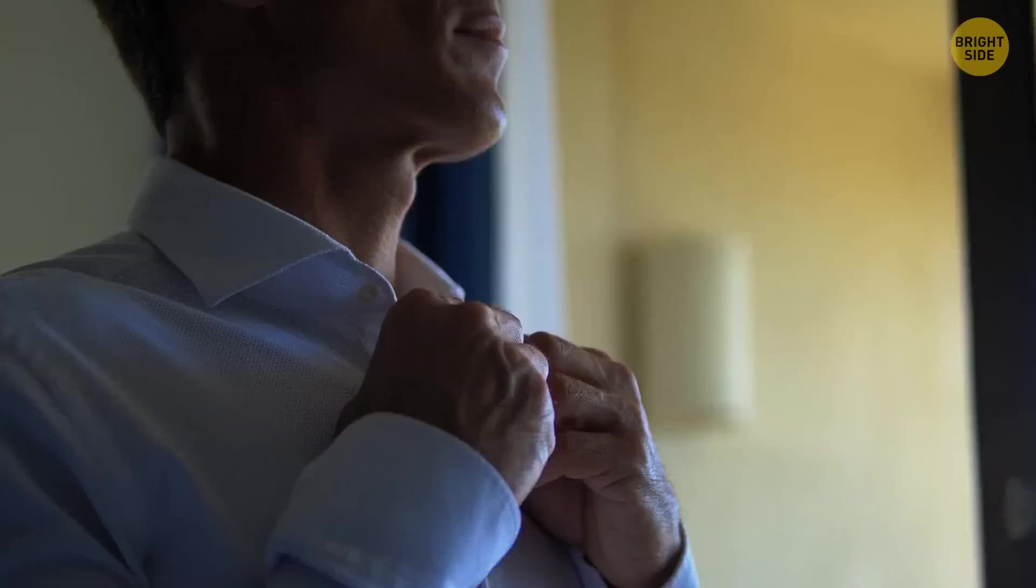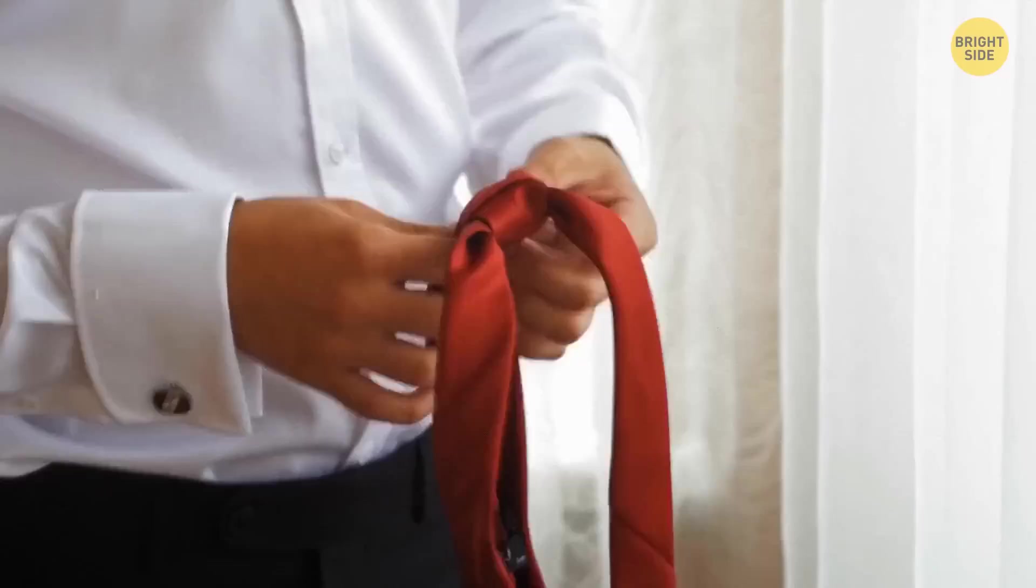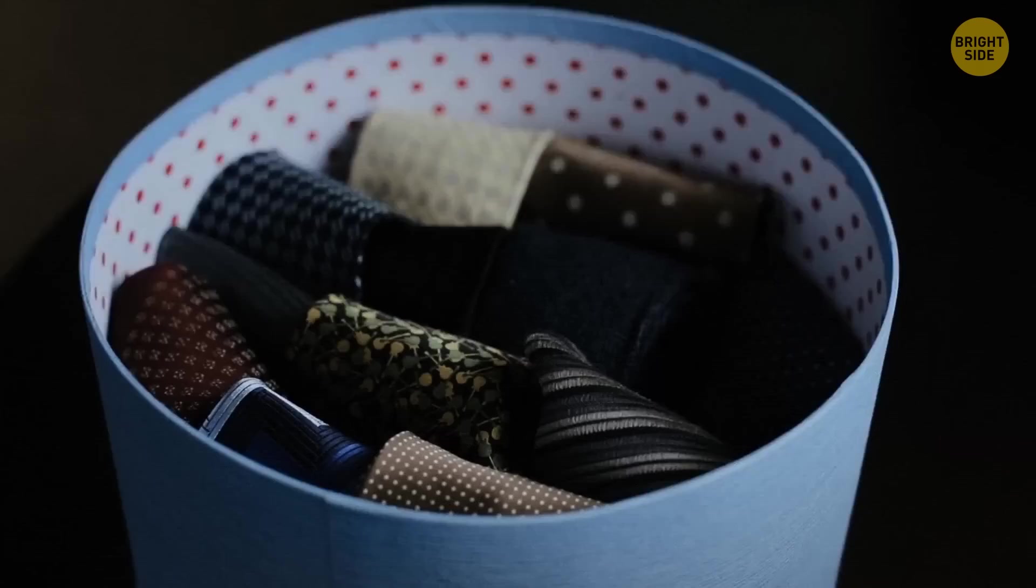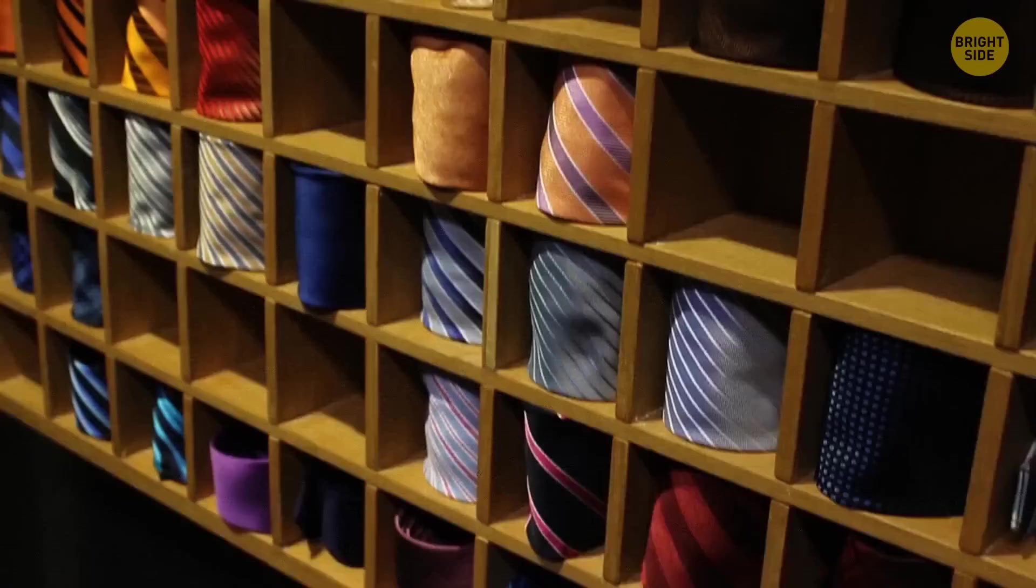And here's the initial purpose of a tie. They created it in the 17th century Europe to tighten the collar. This way, people protected their necks from a strong wind. Then, they got used to this part of the outfit and made it a must-have accessory for royal gatherings.